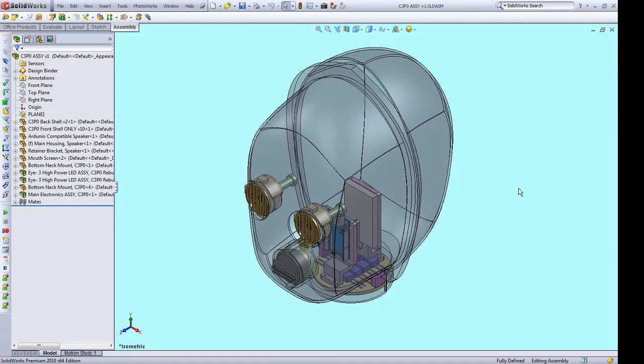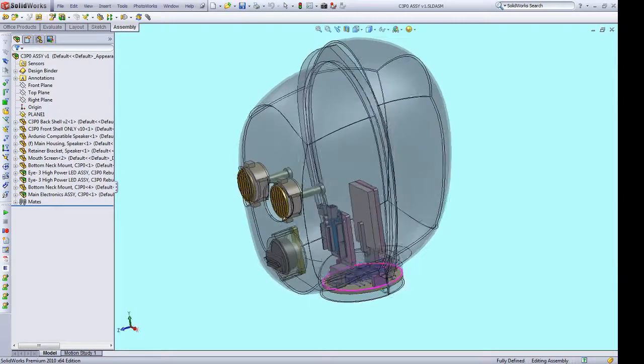So here you can see we have the CAD for the internals of C-3PO's head. So basically in there we have to have six LEDs, three in each eye to provide the light that C-3PO has in his eyes. And then we have a speaker right behind the mouth so that he can talk. And then we have to have the electronics that drive all that.